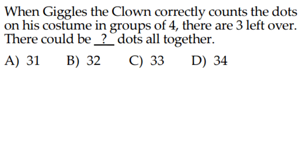So when Gules the Clown correctly counts the dots on his costume in a group of 4, there are 3 left over. There could be blank dots altogether. So we just have to subtract 3 from the answers and see which one's divisible by 4 after that. So let's start off with A. 31 minus 3 is 28, and 28 is divisible by 4. So our answer is A.